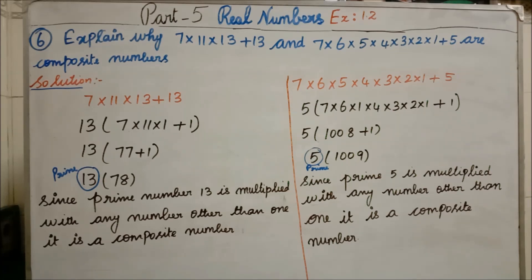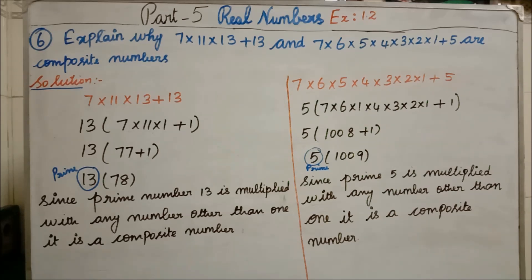These two numbers are composite numbers. If you multiply any prime number with any other number other than 1, the result is a composite number. Students, in Exercise 1.2 all the problems are very, very simple — only a minute thing will be there, and if you understand that, you will be very clear. Now we will see the 7th question.